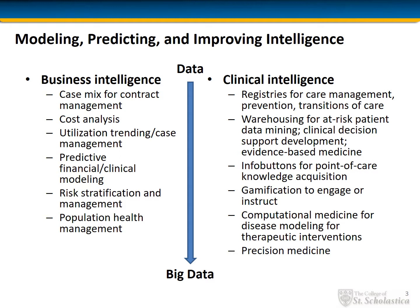Examples for the clinical side of healthcare intelligence include registries for care management, prevention, and transitions of care — which are registries as previously defined, plus analytics capabilities. Also included are warehousing for at-risk patient data mining, clinical decision support development, and evidence-based medicine; info buttons for point-of-care knowledge acquisition; gamification to engage or instruct healthcare professionals, patients, caregivers, and others; and computational medicine for disease modeling for therapeutic interventions and precision medicine.